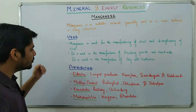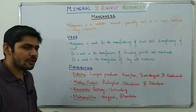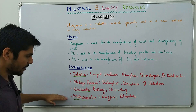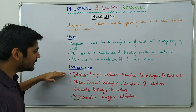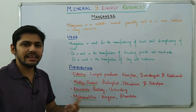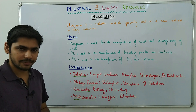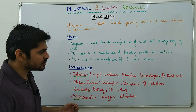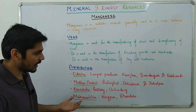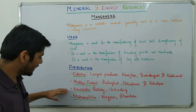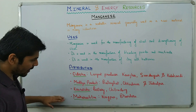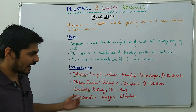The four states that produce the most manganese are Odisha, Madhya Pradesh, Karnataka, and Maharashtra. Currently Odisha is the largest producer, with locations at Keonjhar, Sundargarh, and Kalahandi. In Madhya Pradesh, manganese is found in Balaghat, Chhindwara, and Jabalpur. In Karnataka it is found in Bellary and Chitradurga. In Maharashtra it is found in Nagpur and Bhandara.